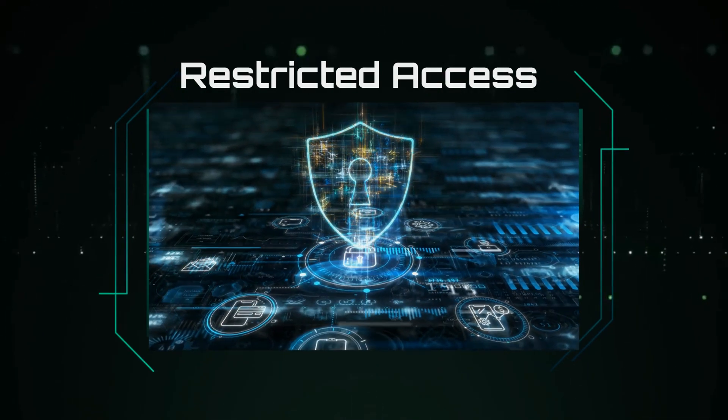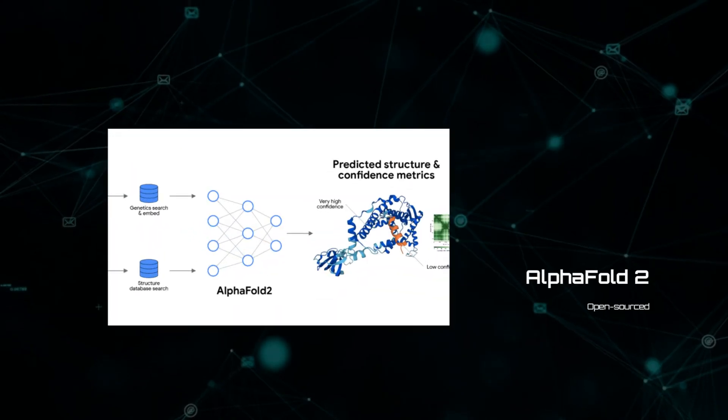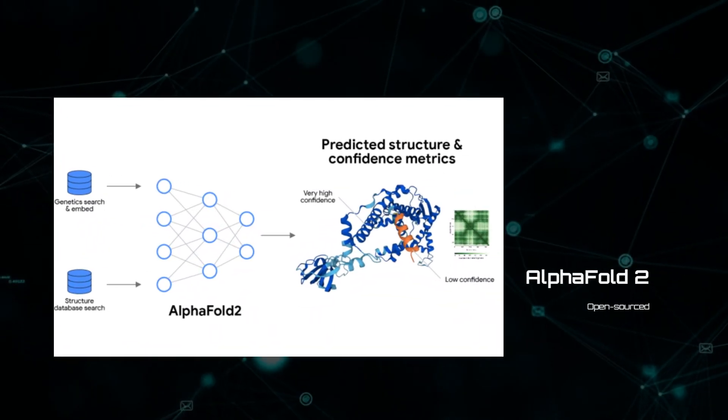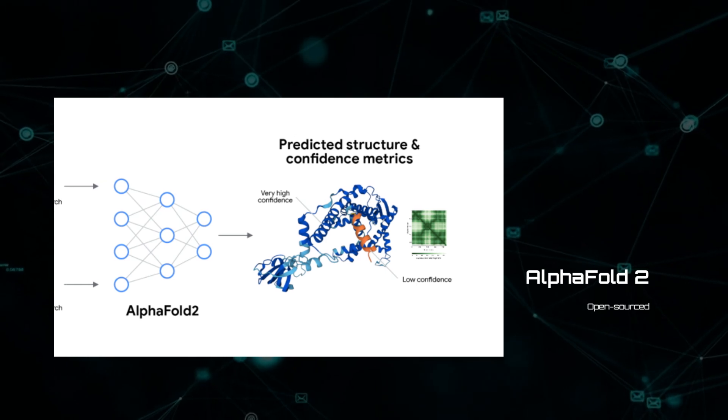Part of AlphaFold3's impact depends on how DeepMind grants access. For AlphaFold2, the company released the open source code, allowing researchers to understand how it worked and use it commercially.